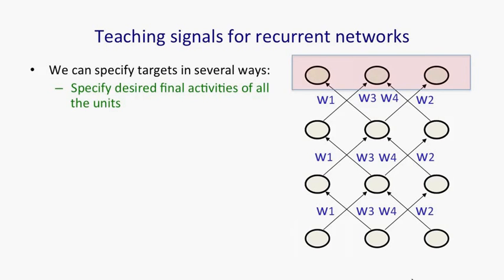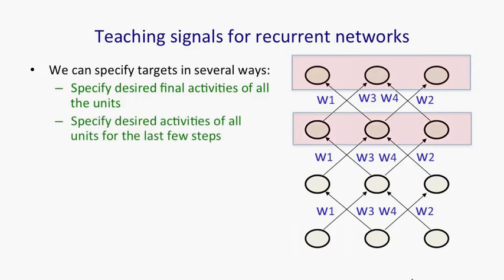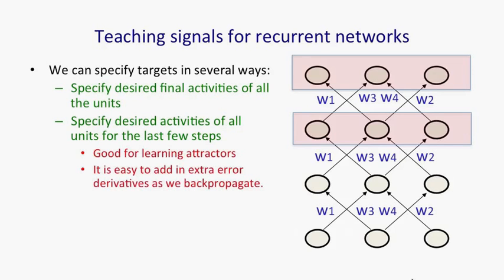If we're trying to train it to settle to some attractor, we might want to specify the desired states not just for the final time step, but for several time steps. That will cause it to actually settle down there rather than passing through some state and going off somewhere else. So by specifying several states at the end, we can force it to learn attractors.